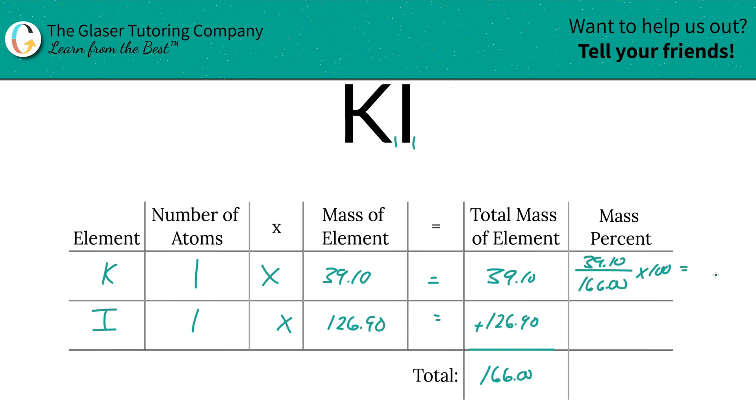And when we do that, we get a value of approximately 23.55%. So that's the percent of potassium in potassium iodide.